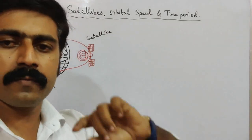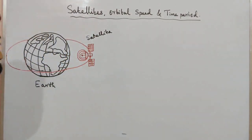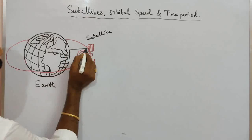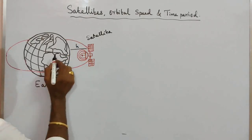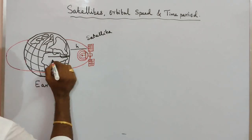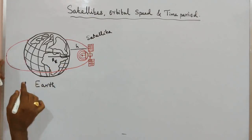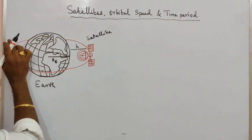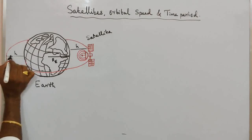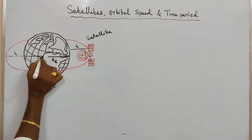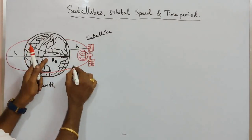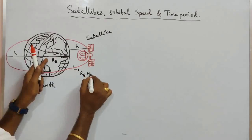In the artificial satellite, it revolves around the Earth in a circular orbit. There is a height distance h from the Earth's surface. We know that the radius of the Earth is Re. So from the midpoint of the Earth to the satellite, the total distance is Re plus h.